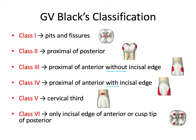Class 6 decay is probably the rarest, and it refers to decay on the incisal edge of anterior teeth alone, or a cusp tip or multiple cusp tips of a posterior tooth. This unique type of decay is often caused first by some kind of abrasion or erosion, and then those defects expose underlying vulnerable dentin that is then cavitated.